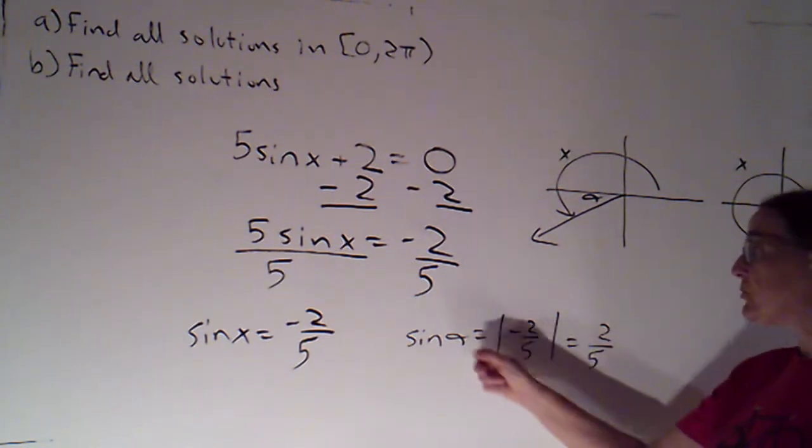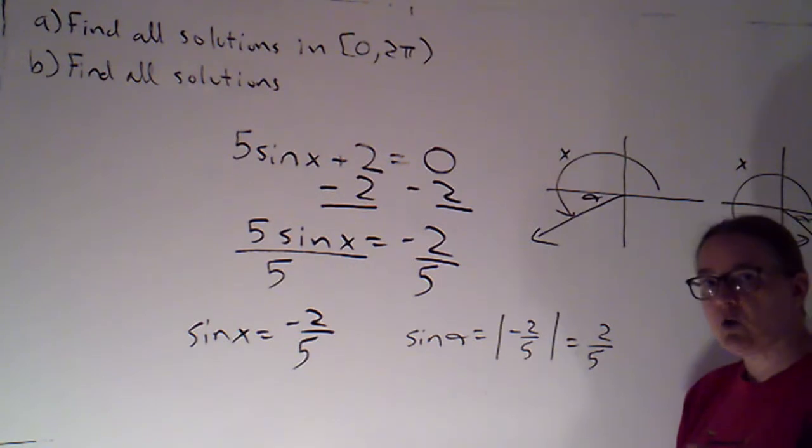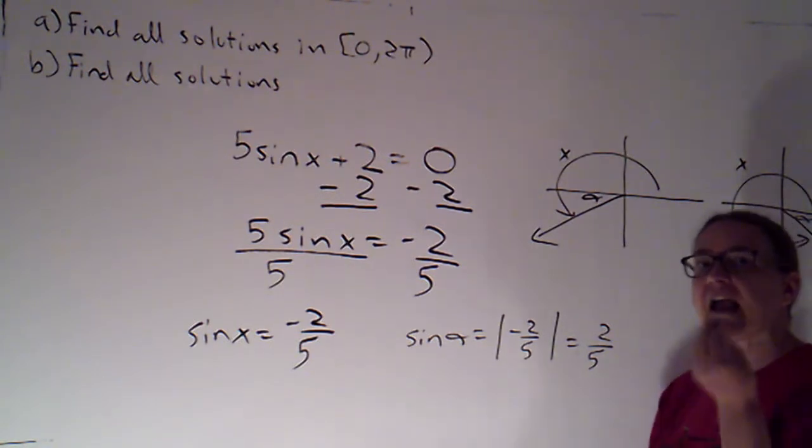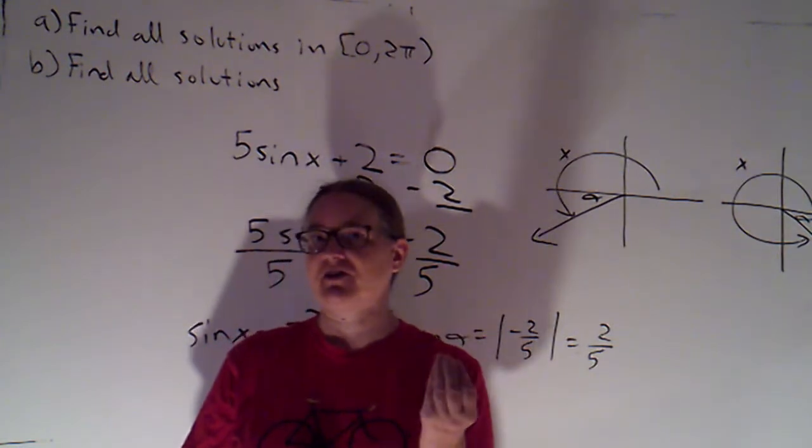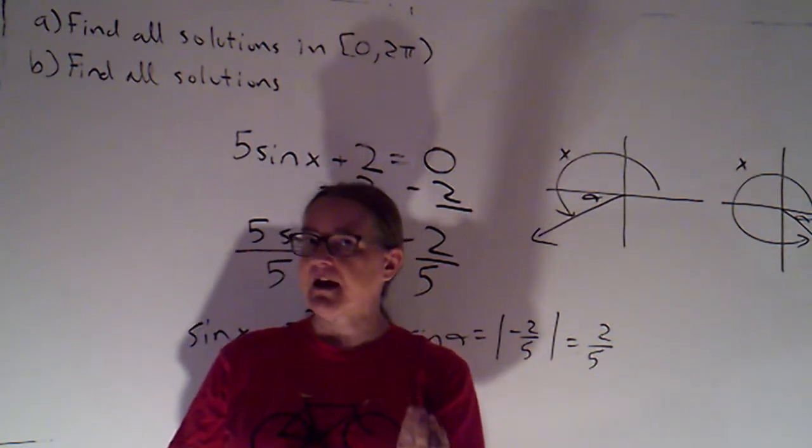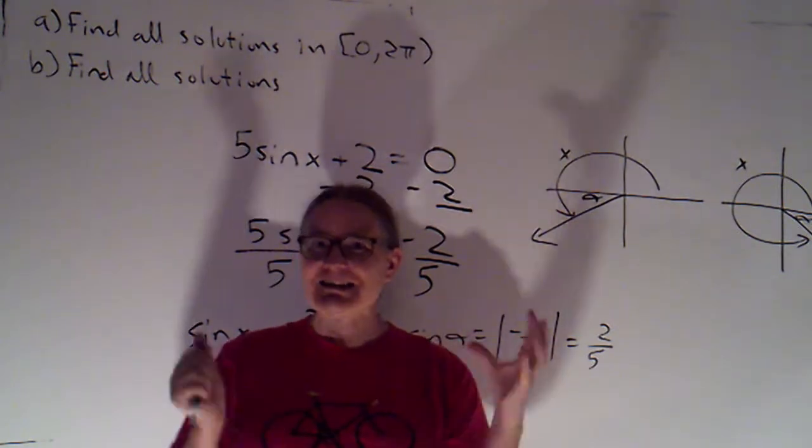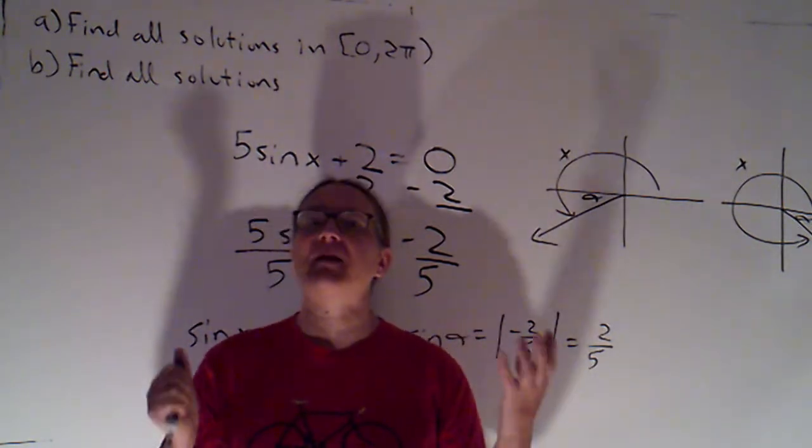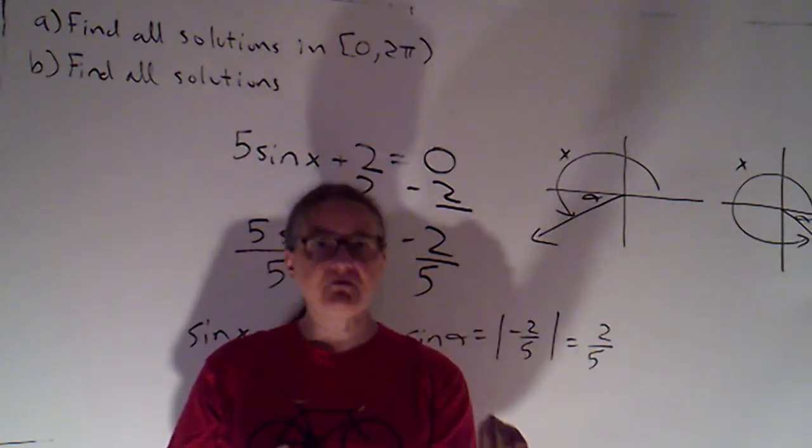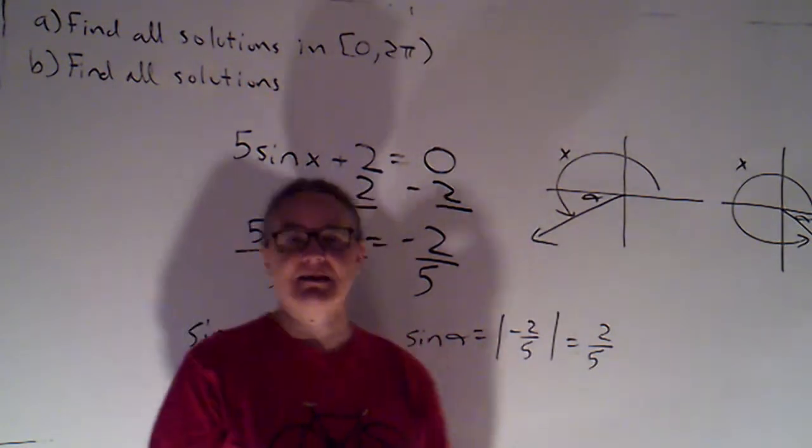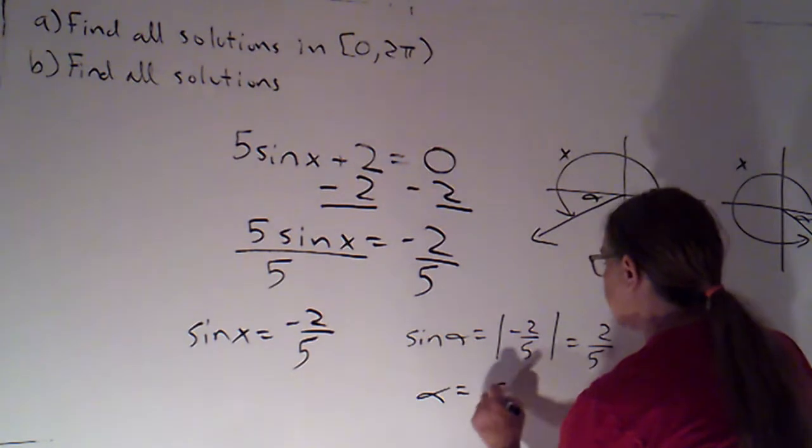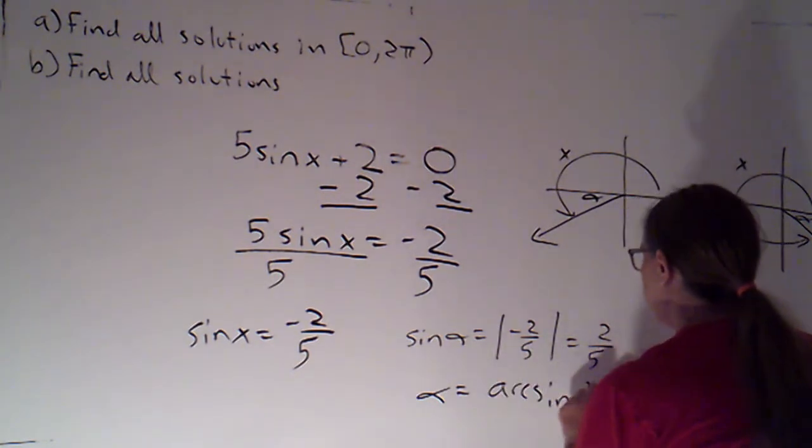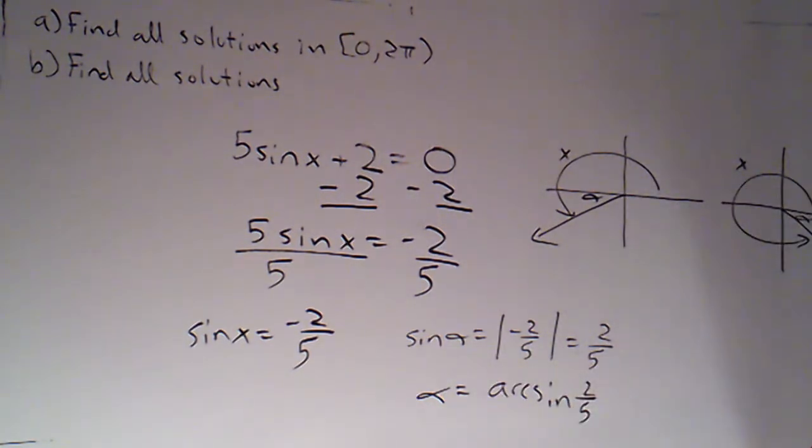And what's nice about the reference angle is it's always an acute angle. And acute angles are in the range of every single trig function. So if I'm working with the reference angle, I don't have to double check, is this going to be in the range of my inverse trig function? Acute angles are in the range of every single one. So I'm just going to say here alpha is arc sine of 2 fifths.